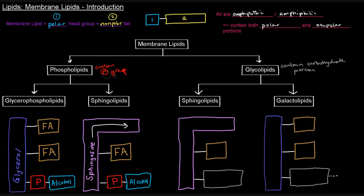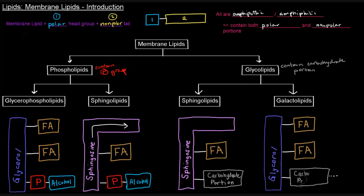Both are phospholipids because they have phosphates in their polar head groups, and the only real difference is the backbone. Now, glycolipids contain a carbohydrate portion as their polar head group. There can be glycosphingolipids — these have a sphingosine backbone, one fatty acid, and a carbohydrate polar head group. Galactolipids are a bit different: they have a glycerol backbone, two fatty acid tails, and a carbohydrate portion. If a sulfate group is attached to the carbohydrate portion on a galactolipid, what you have is a sulfolipid.